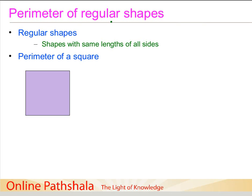Hello, and in this video we are going to continue our discussion on finding the perimeter with a special emphasis on regular shapes. Just to remind you, regular shapes are those shapes which have same lengths for all the sides.